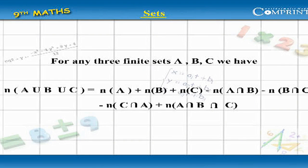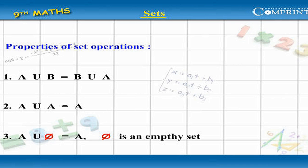Sets. For any three finite sets A, B, C: Number of A union B union C equals Number of A plus Number of B plus Number of C, minus Number of A intersection B, minus Number of B intersection C, minus Number of C intersection A, plus Number of A intersection B intersection C.